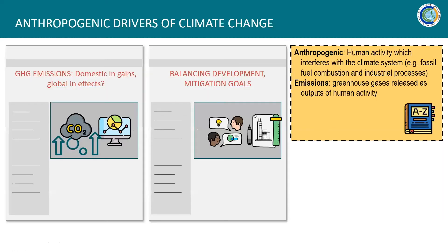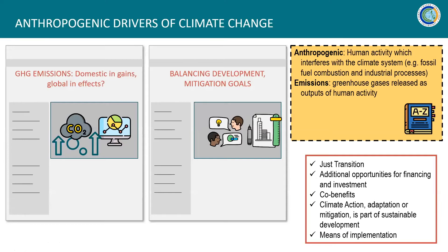Now we move to mitigation. There are usually two key concerns about the anthropogenic drivers of climate change. The first: GHG emissions — the message and gains are global in effects. Developed countries were able to emit higher than developing countries because they heightened their economic activity, but the impacts of climate change are felt by countries across the globe. The second is balancing development and mitigation goals — are we compromising our development goals in favor of mitigation, and is it really incompatible?